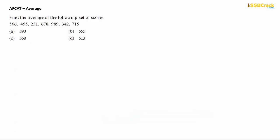Let's now look into the very first question of this lecture on the topic of Average. Question 1 asks you to find the average of a given set of scores: 566, 455, and so on till 715. As you can see, there are seven data values. To find the average, we use a very simple formula — the mean, which in other words we call the average.